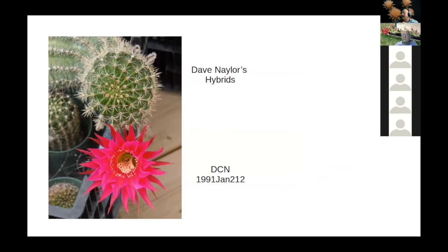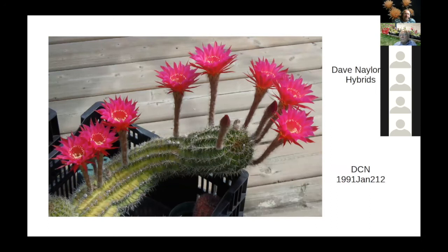This one has quite pointy, narrow petals, and as you can see the plant is laying down — the next picture shows just how much. These plants are kept in crates outside, which still need to be brought in. Dave explains his process: he puts the crates under his front porch to let the plants dry out for about a month — if they don't freeze — before putting them in the basement for winter.